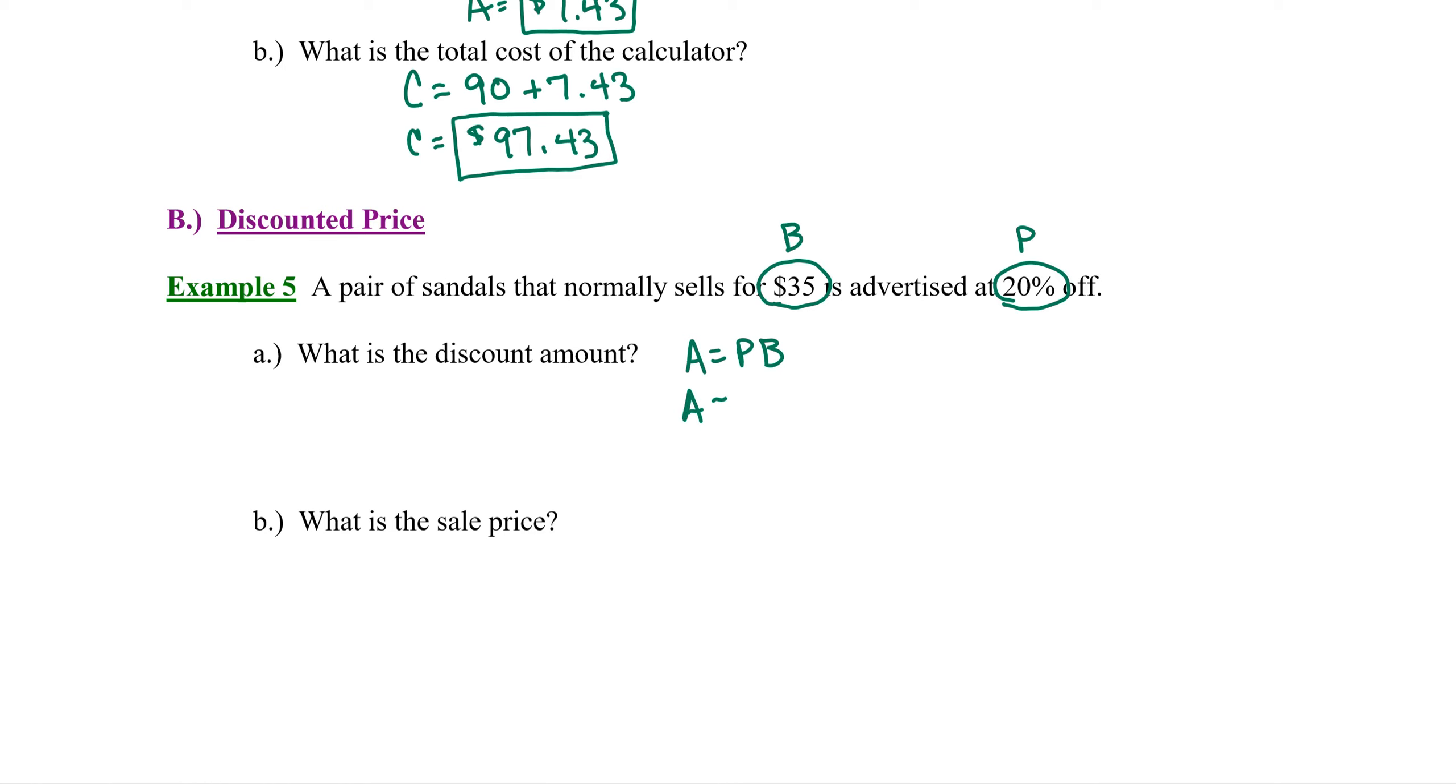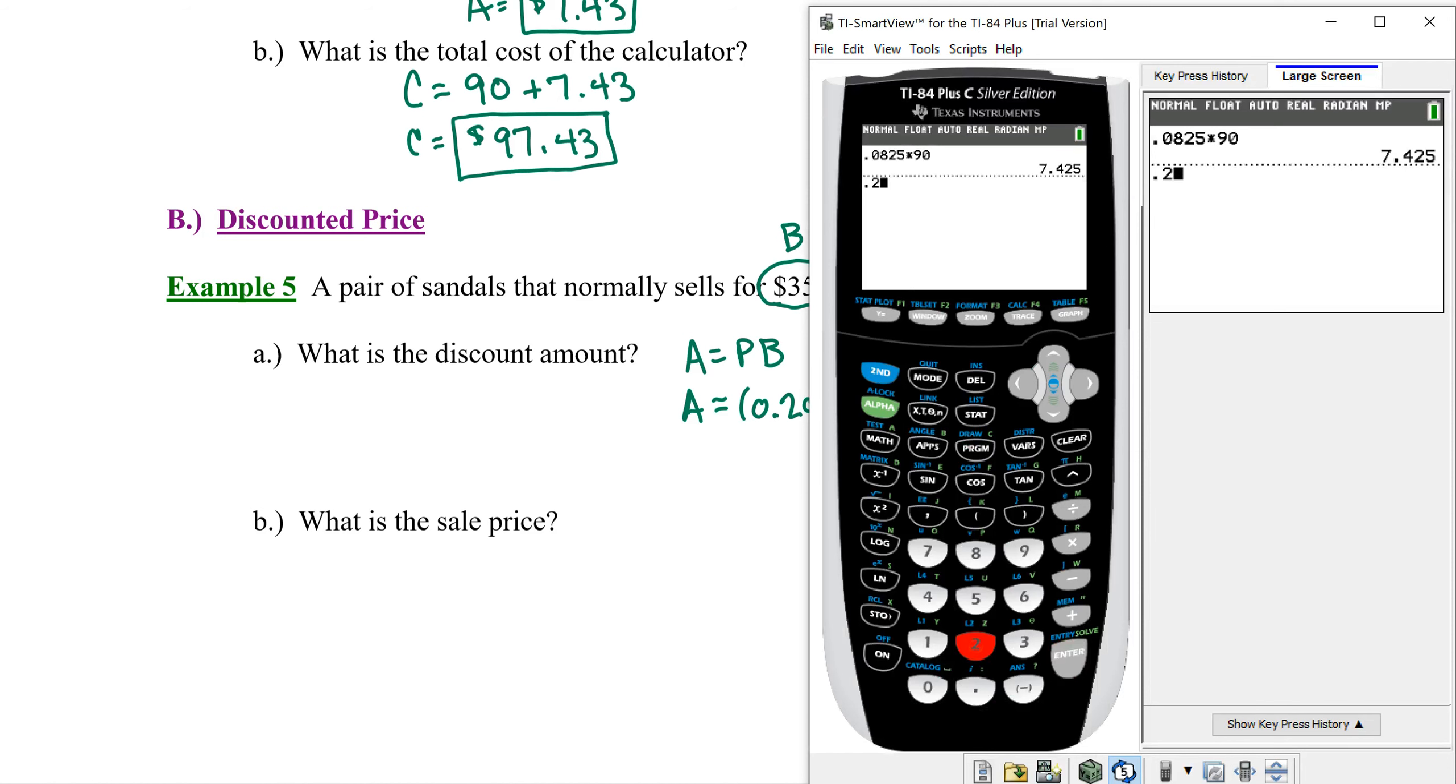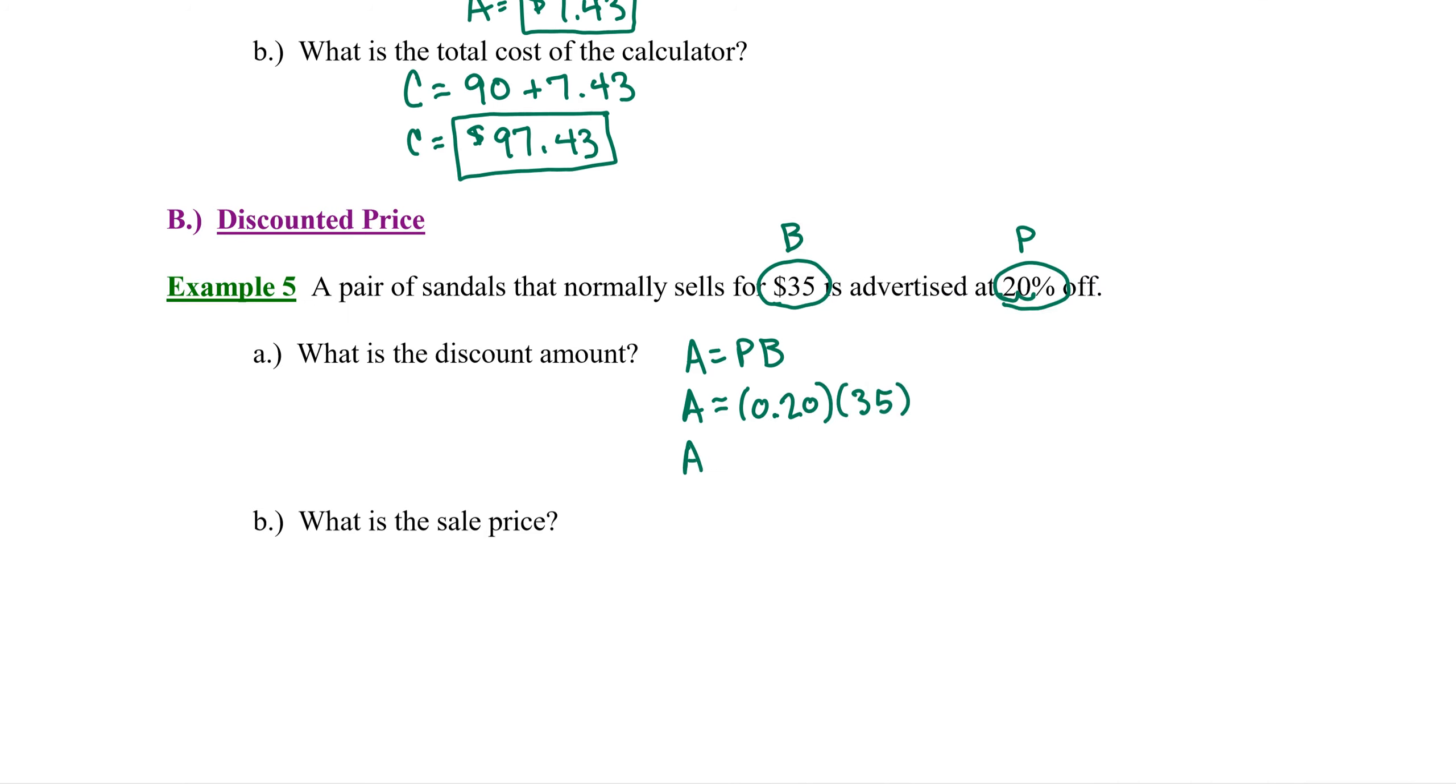The discount amount here will be A. Converting 20% to a decimal by moving the decimal two places to the left, we get 0.20. The price of the sandals is $35. Multiplying 0.2 times 35 gives us 7. So the discount amount is $7.